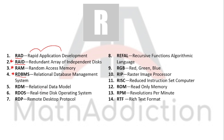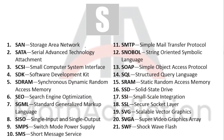RDOS: Real-Time Disk Operating System. RDP: Remote Desktop Protocol. REFL: Recursive Functions Algorithmic Language. RGB: Red Green Blue. RIP: Raster Image Processor. RISC: Reduced Instruction Set Computer. ROM: Read-Only Memory. RPM: Revolutions Per Minute. RTF: Rich Text Format.